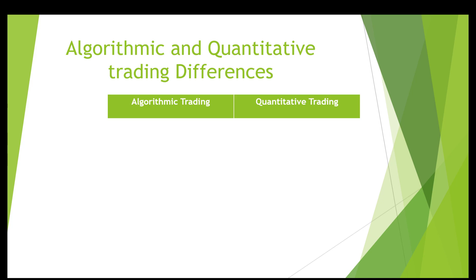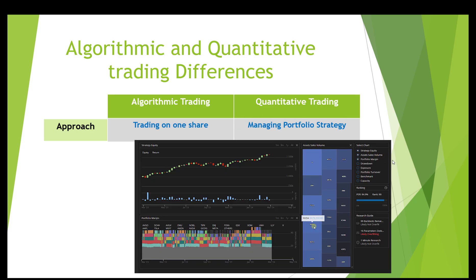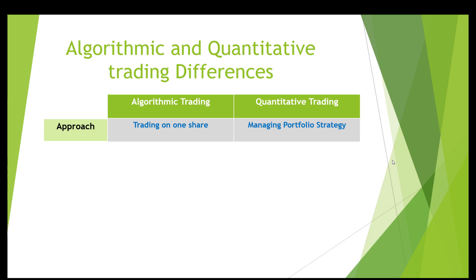In quantitative trading, the primary goal is to construct a diversified portfolio comprising various assets such as stocks, cryptocurrencies, and forex pairs. On the other hand, algorithmic trading tends to focus more on individual assets, although there are always some exceptions where multiple assets may be traded simultaneously. However, the emphasis typically lies in executing strategies on a single pair or share rather than managing a broad portfolio.